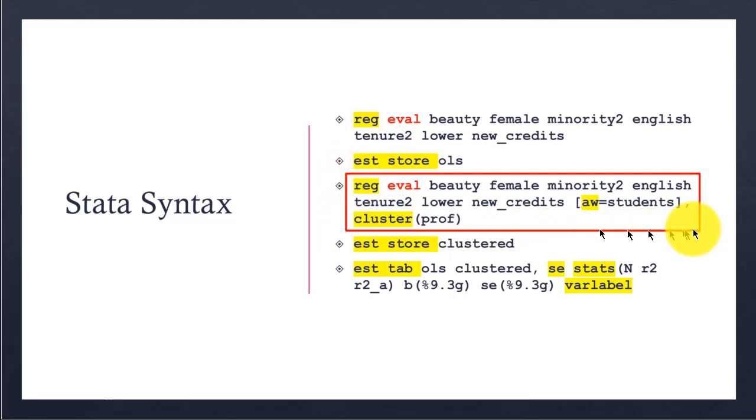What you see in red is all I need to run a model where the model is weighted by the variable students and the standard errors are clustered around professors. The same command goes all the way up, and then just a tiny addition: within brackets, aw for analytic weights equals students, close square bracket, comma cluster, and then the name of the variable in parentheses. I stored the results from this with est store clustered.